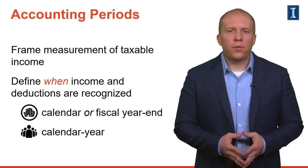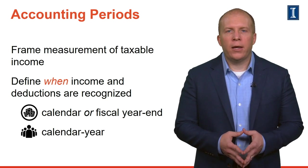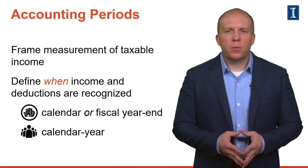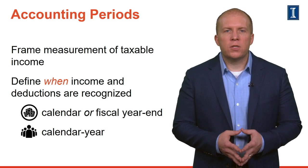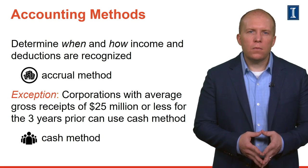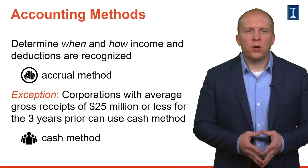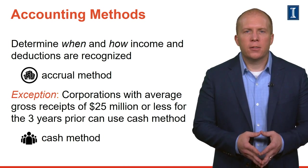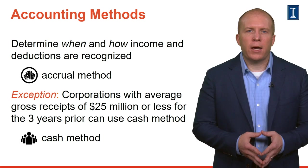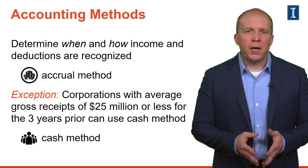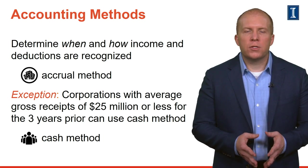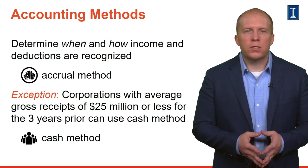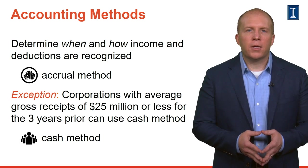Accounting periods help frame the measurement of taxable income and define when items of income and deduction are recognized. For tax purposes, most corporations can choose either a calendar or fiscal year, whereas individuals typically must use a calendar year-end. The method of accounting determines when and how income and deductions are recognized. However, unlike individuals, corporations are generally required to use the accrual method of accounting unless certain exceptions are met. For example, for tax years beginning after 2017, corporations with average gross receipts of $25 million or less for the most recent three-year period can adopt the cash method of accounting.